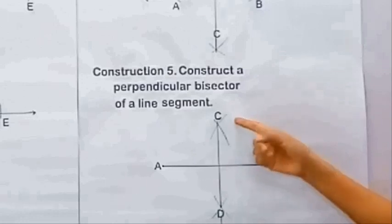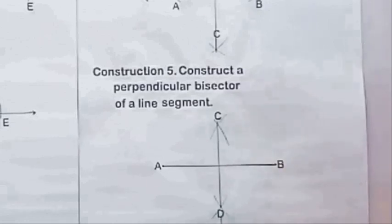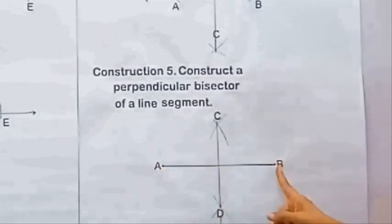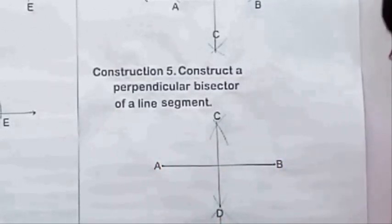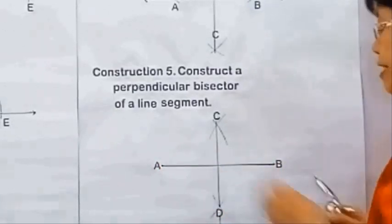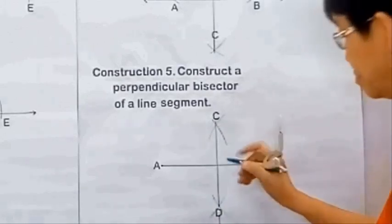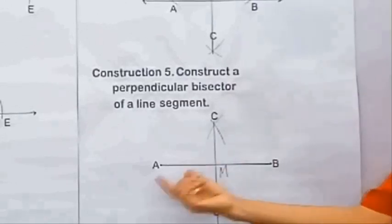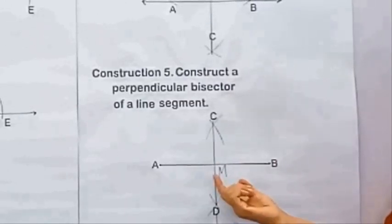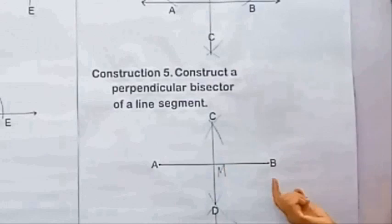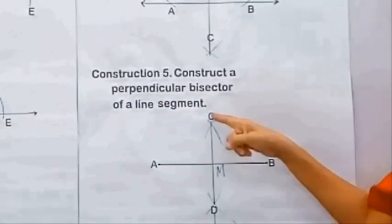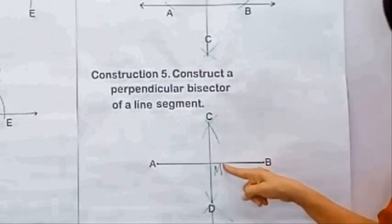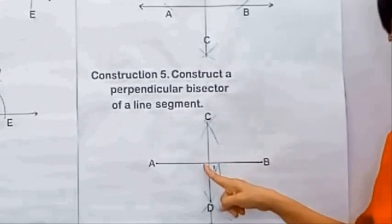The line CD is the perpendicular bisector of segment AB because it cuts the line segment at its midpoint. So we say AM is congruent to MB, and CD is perpendicular, making a right angle at the foot of the perpendicular.